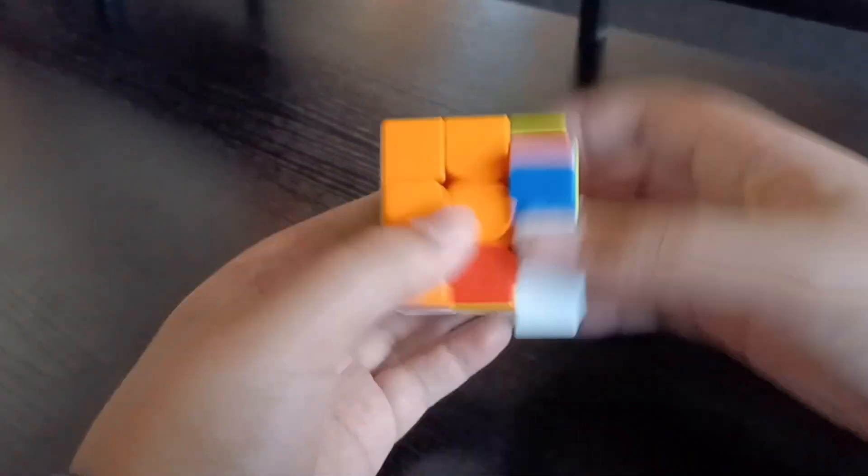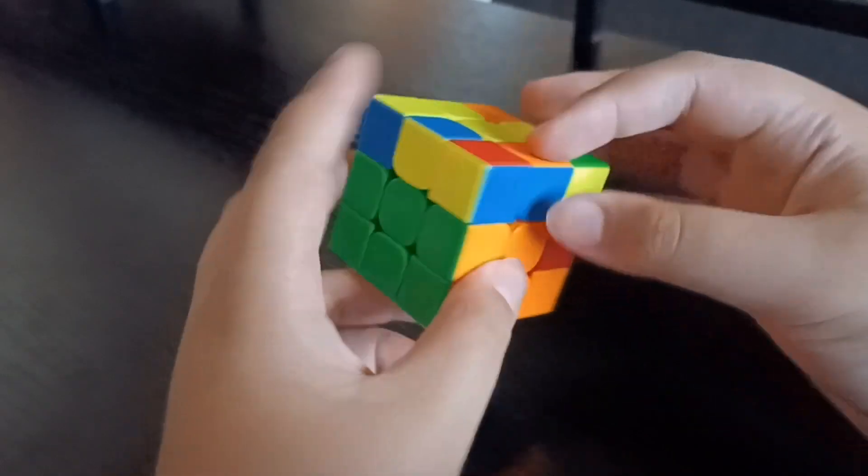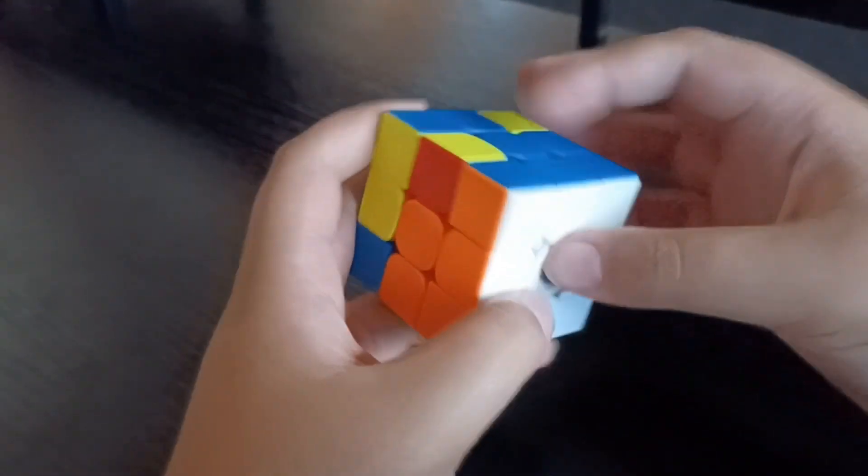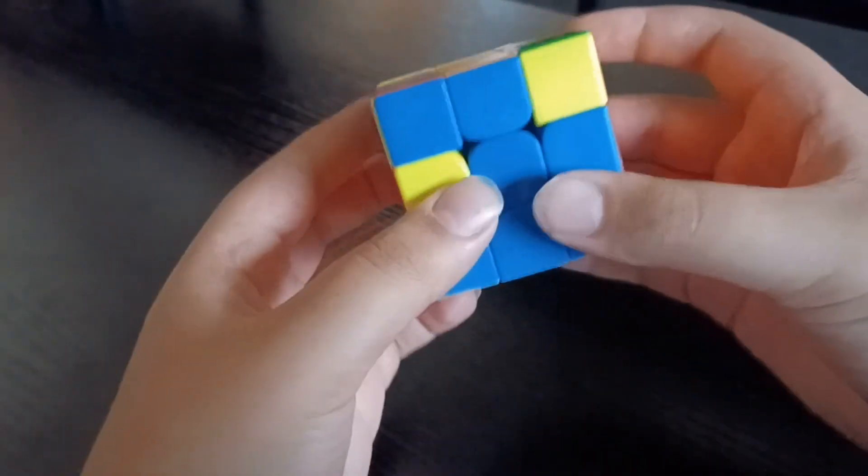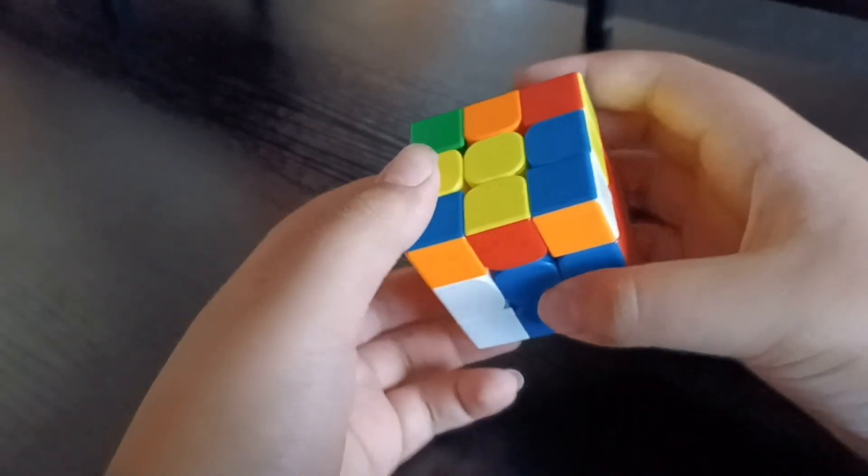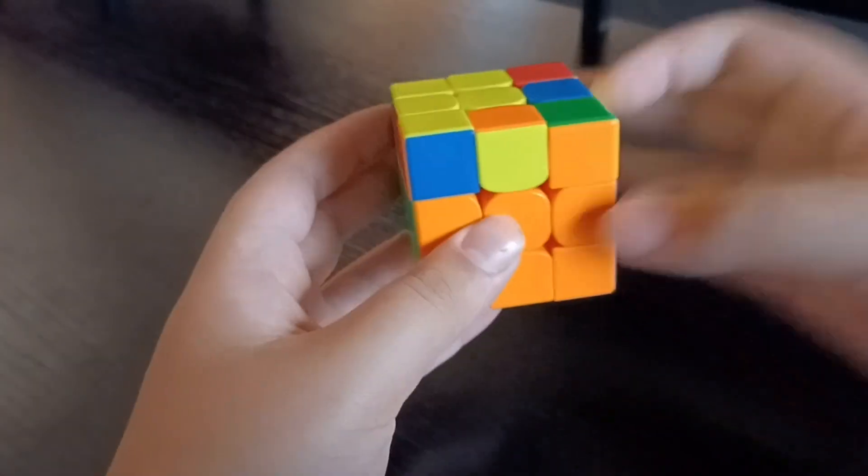So I'm just going to change this case so I can give you guys a visual of the other case that I had. So basically what we're going to do is, as you can see this aligns with the right edge, I mean the right center here. So we're going to move this to the side and we're going to do L prime U prime L U, rotate, and R U R prime.